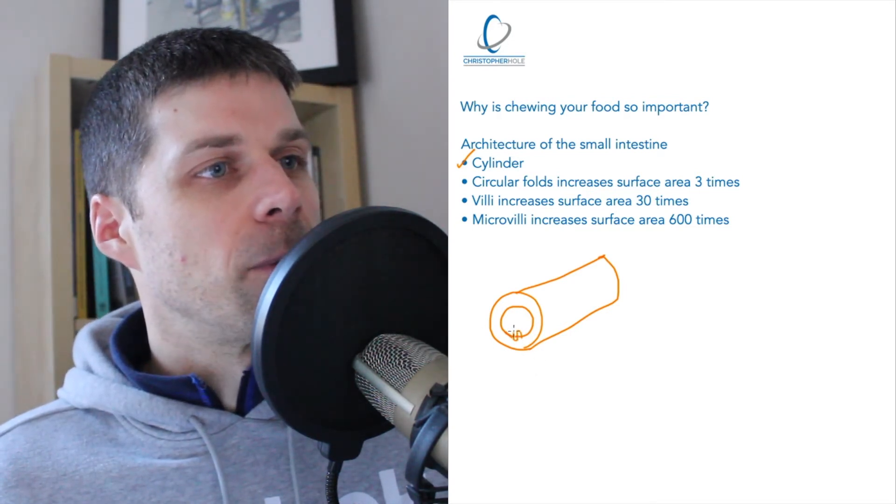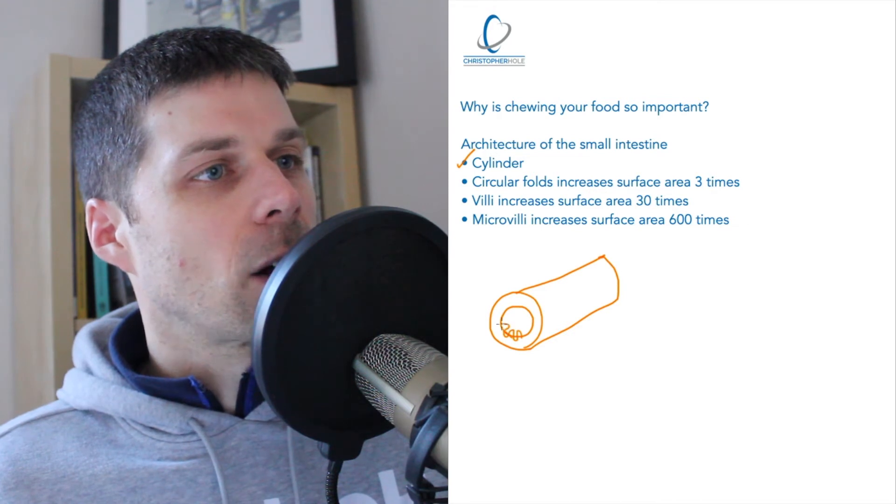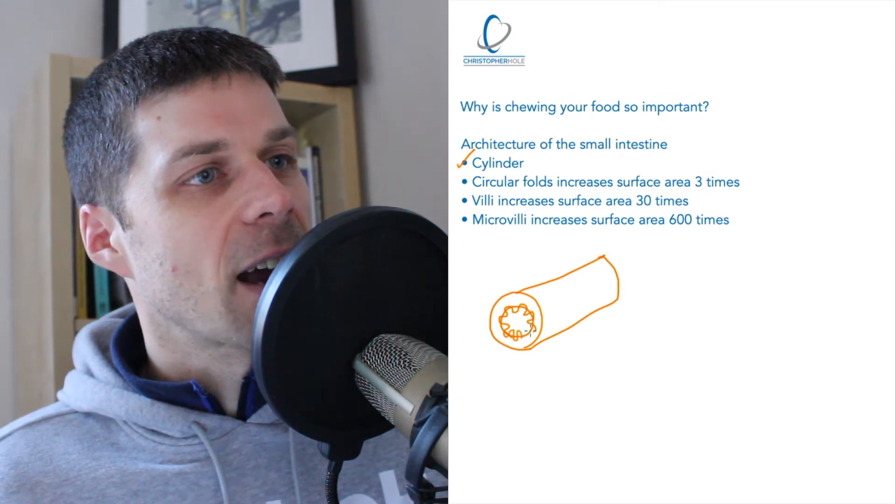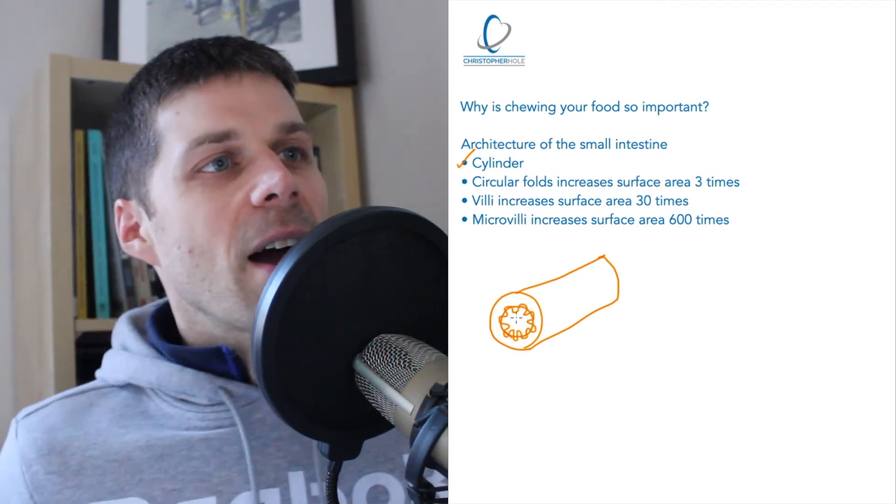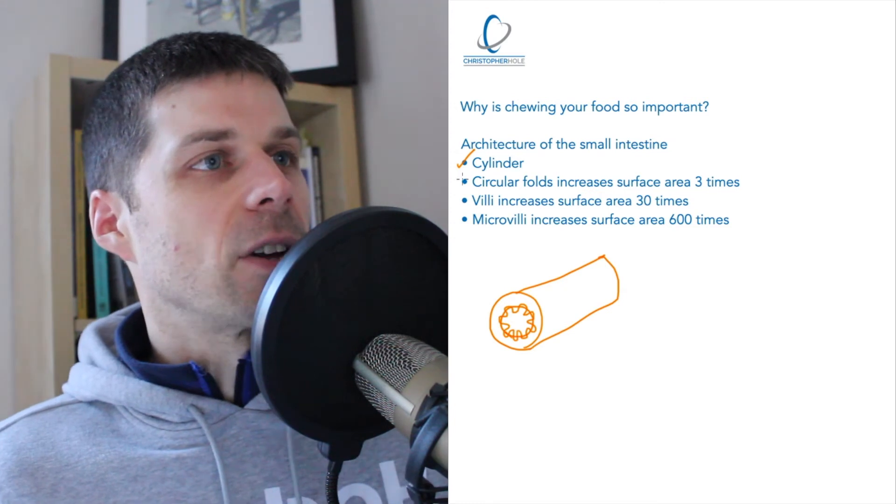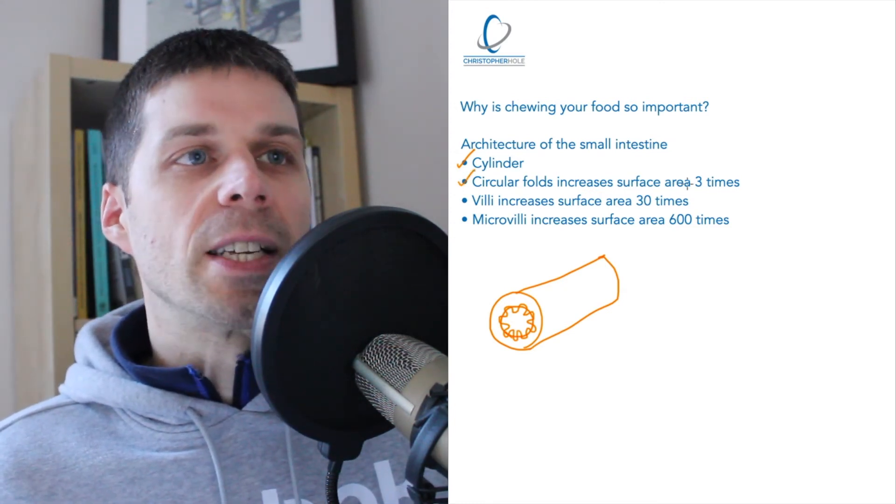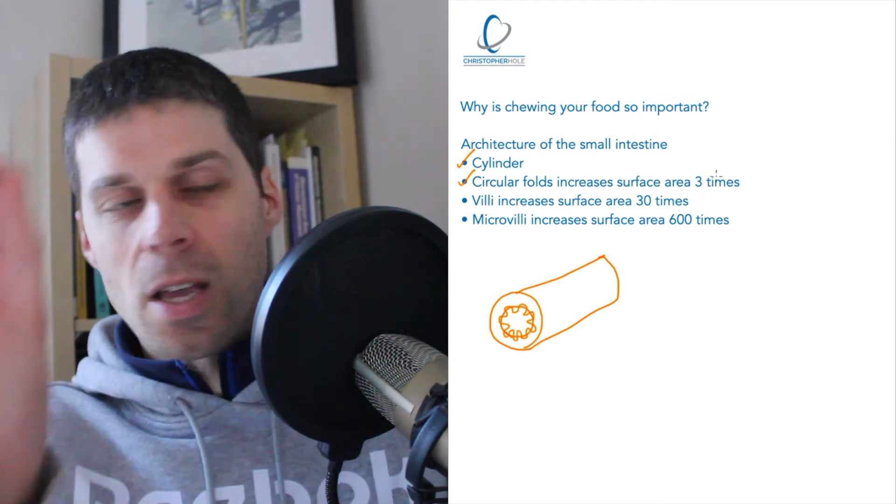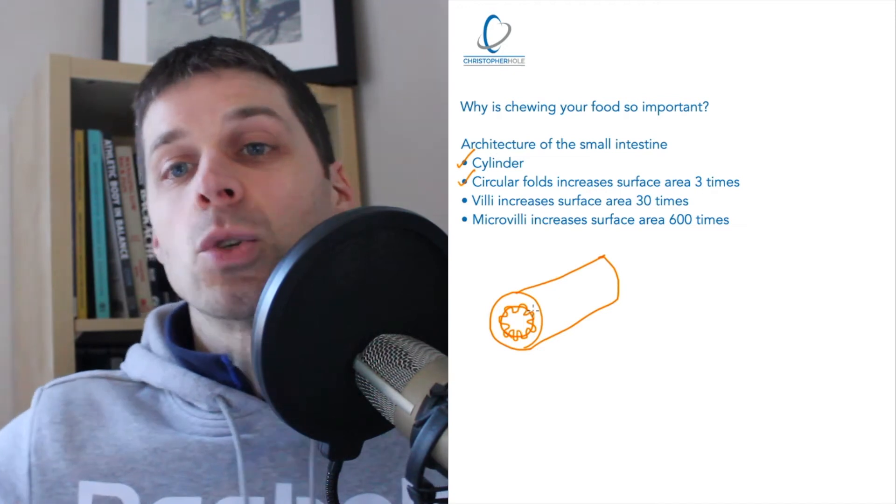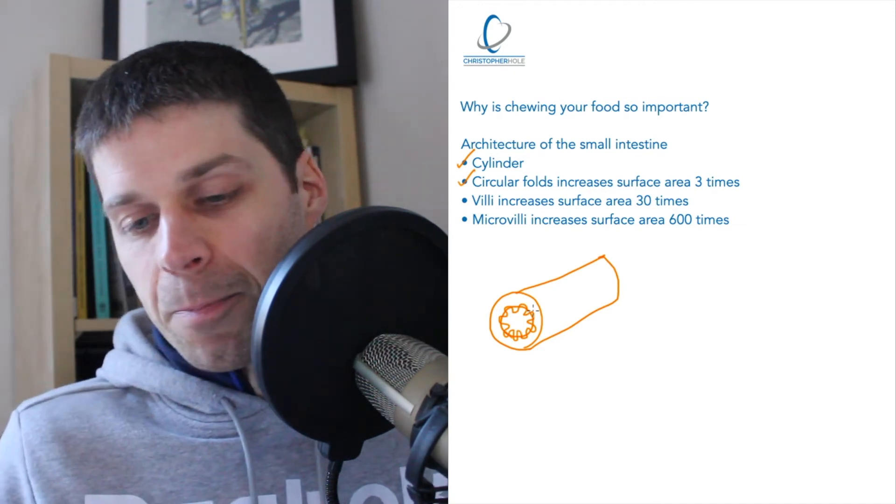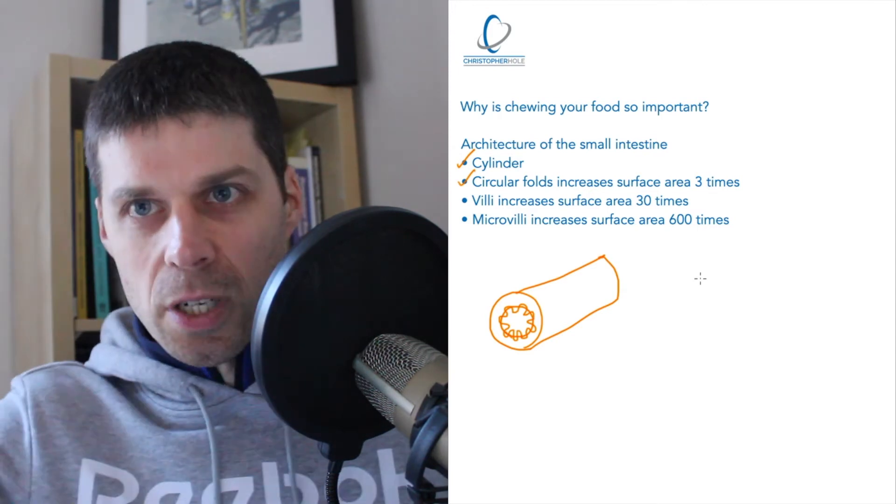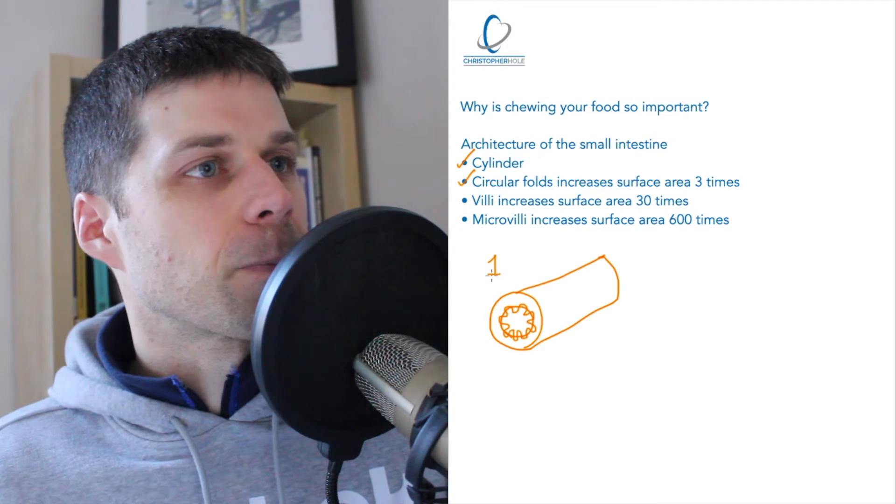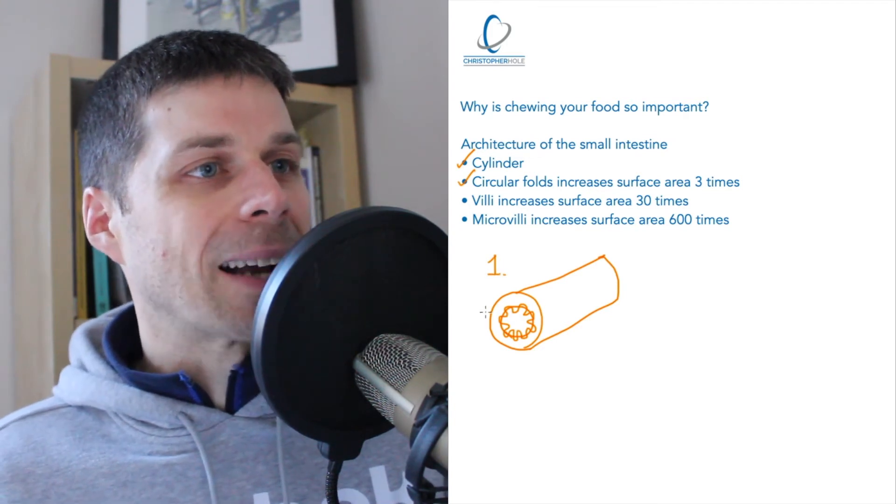...there are little protrusions that go all the way around it, and what they are doing is increasing the surface area. And why they are increasing the surface area, you've got these folds that increase the surface area by three times. Now the reason it's increasing the surface area is so it has more space to absorb more of the nutrients. I'll discuss in a second once I've completed these stages, so let's just call this stage one.